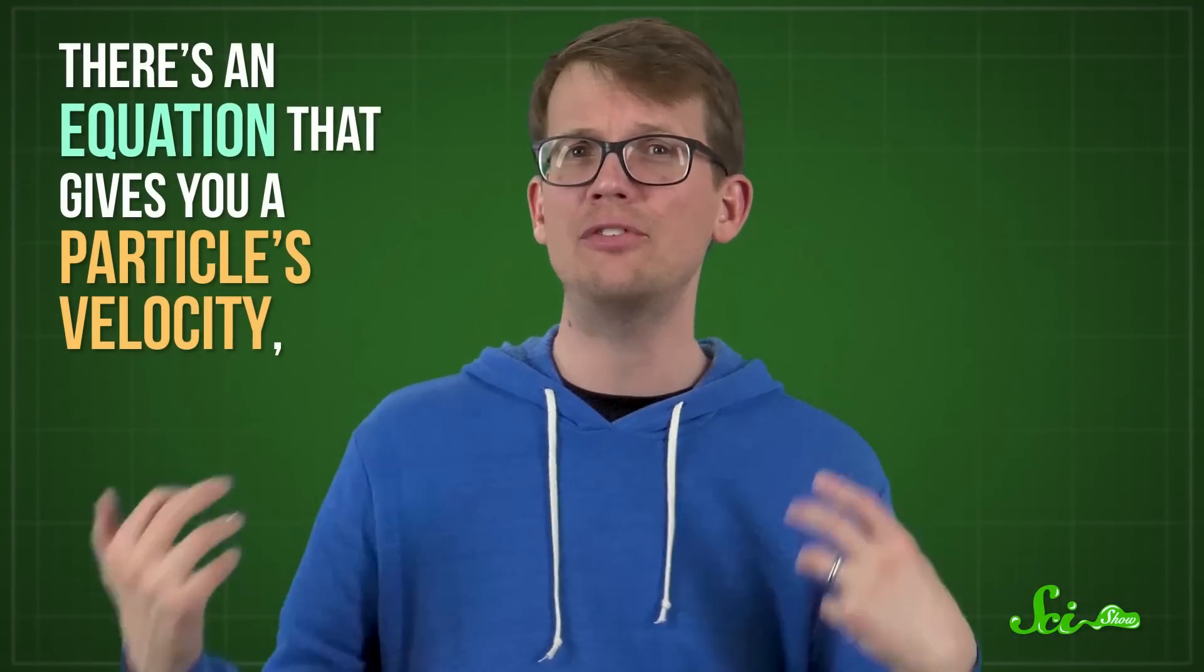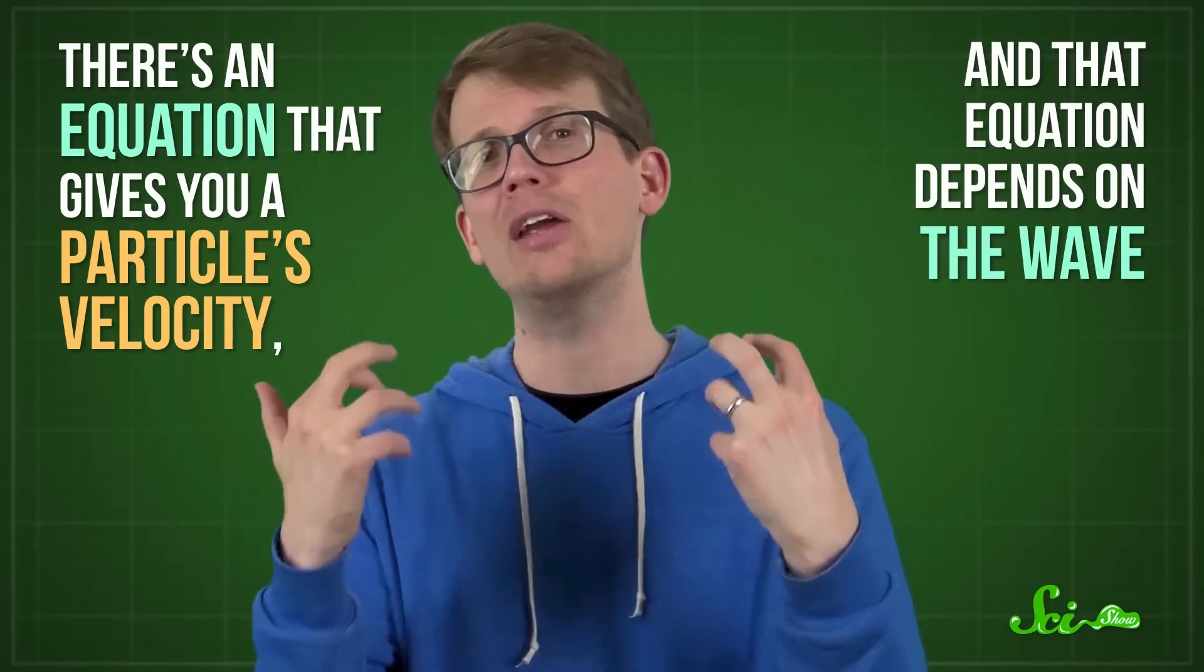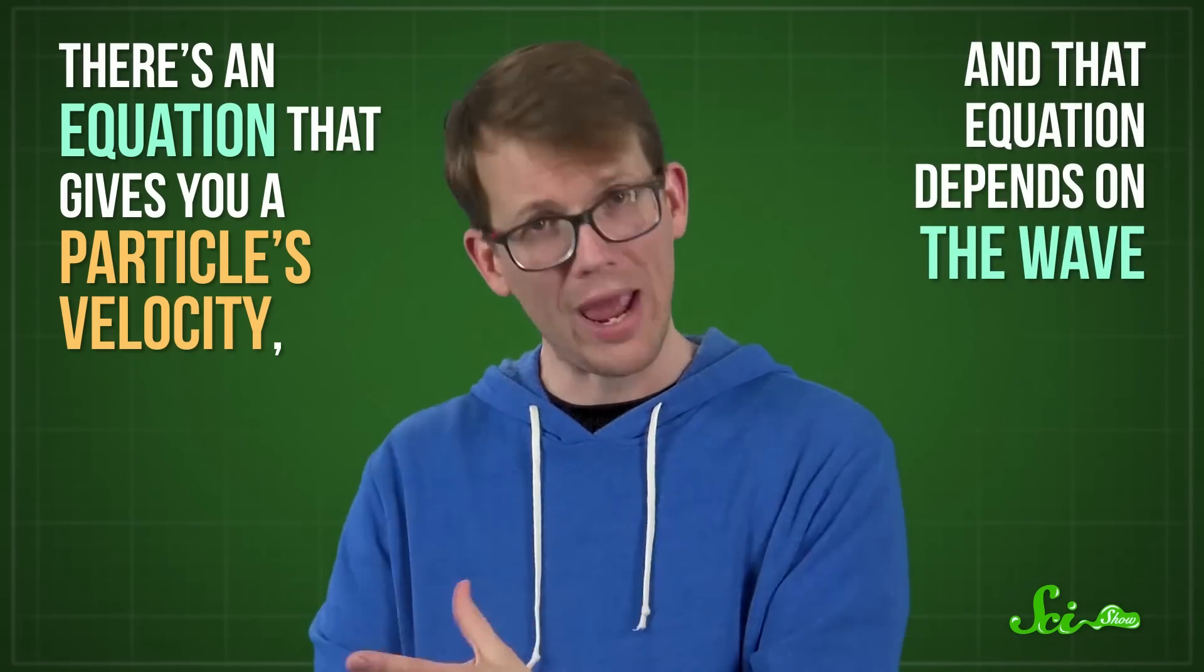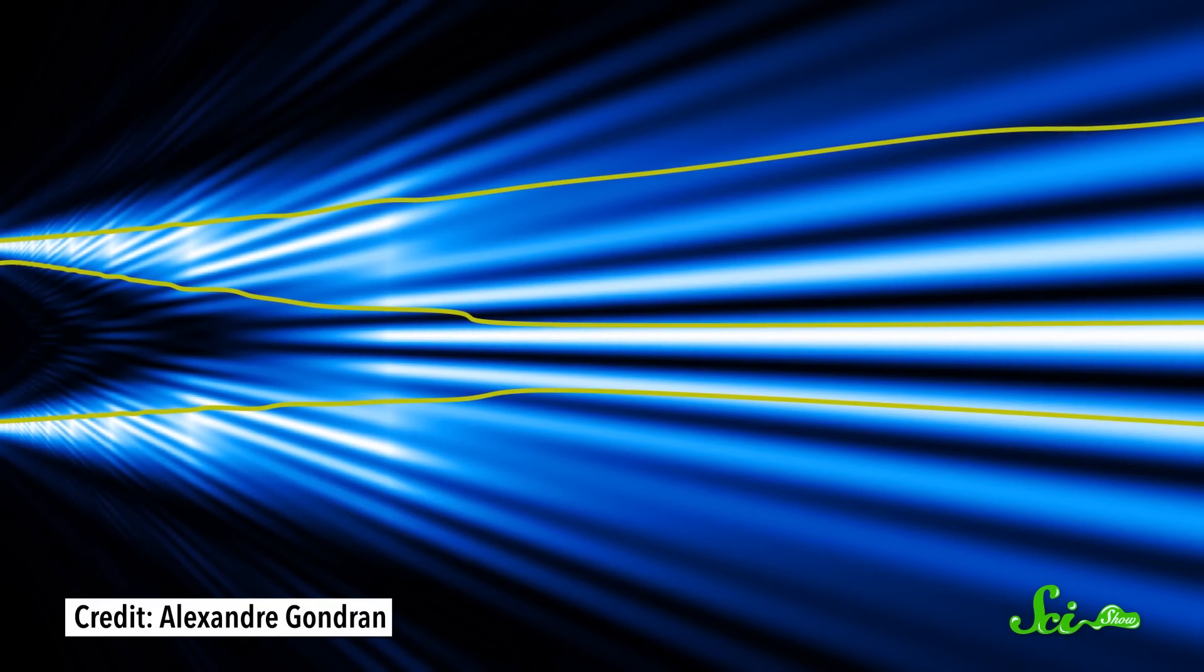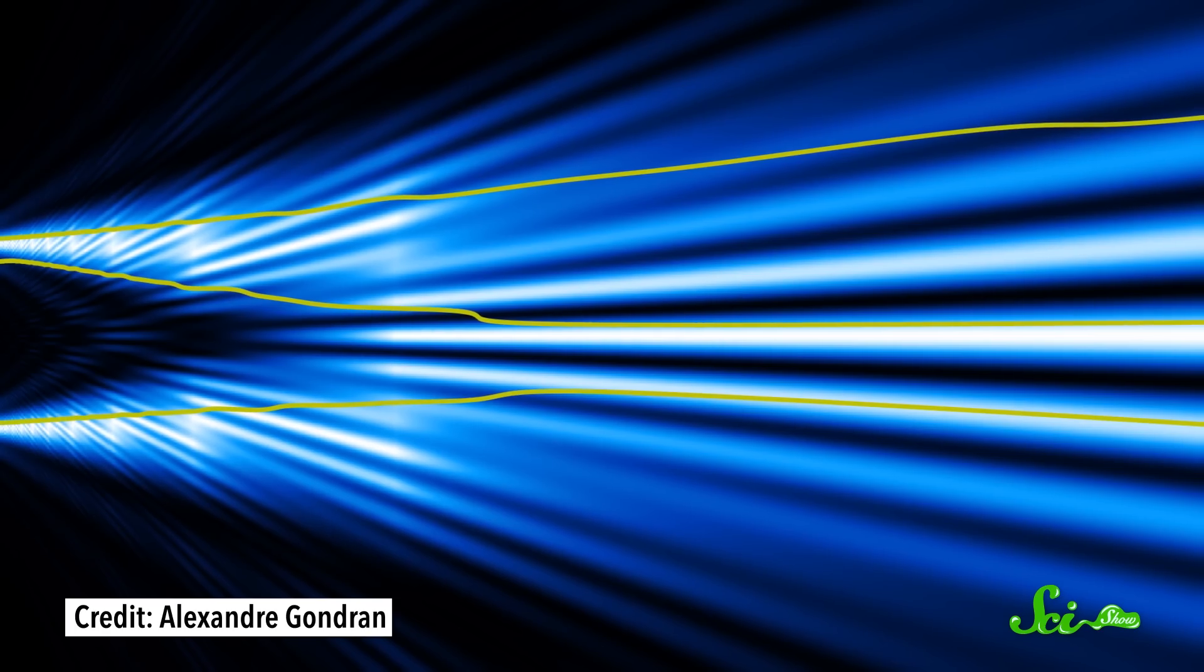It works by distinguishing between particles and waves, instead of treating them as the same thing, like the Copenhagen interpretation does. In pilot wave theory, there are still particles and waves, but they exist separately. There's an equation that gives you a particle's velocity, and that equation depends on the wave. The wave interacts with the particle by guiding the way it moves, or pilots it in other words. That's where the name pilot wave comes from.